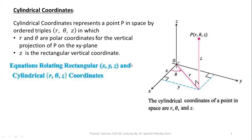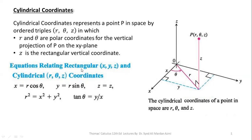We will discuss the relationship between rectangular coordinates and cylindrical coordinates in three dimensions. X equals R cos theta, Y equals R sin theta, and Z equals Z are the transformation equations from the Cartesian coordinate system to the cylindrical coordinate system. The reverse is: R squared equals X squared plus Y squared, and tan theta equals Y over X.